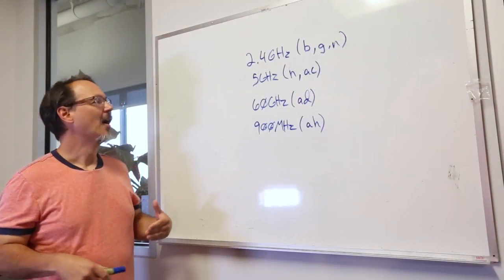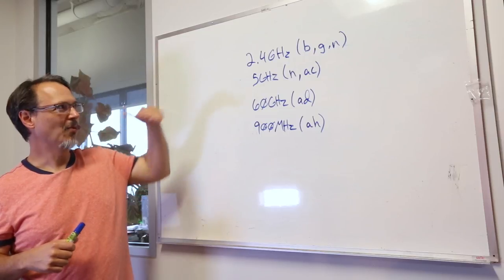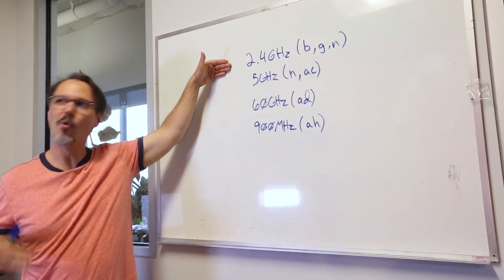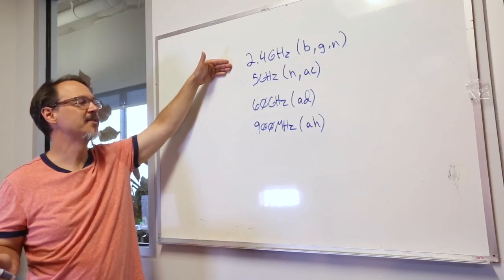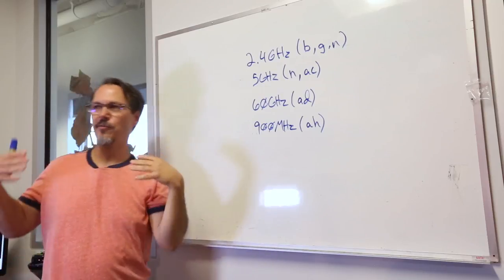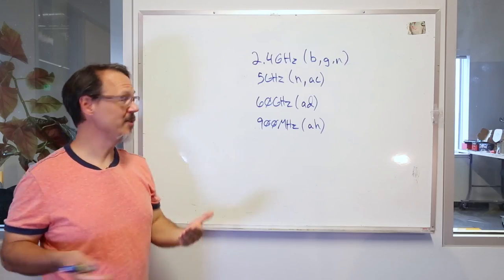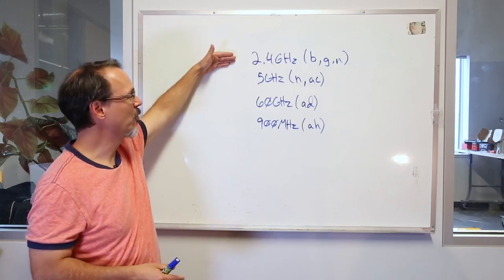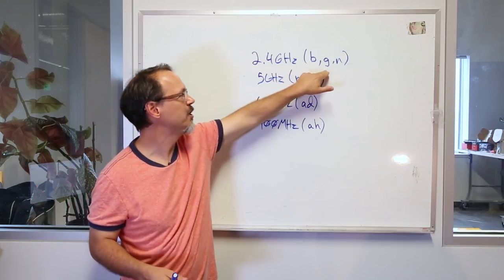Now let's dig a little bit deeper. When I think of 2.4 GHz, I think of Wi-Fi pretty much all over the place. But in fact, Wi-Fi operates on other frequencies as well. For 2.4 GHz, you have B, you have G, you have N.